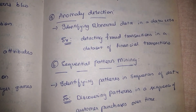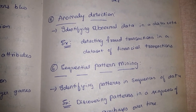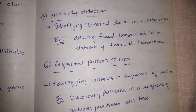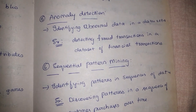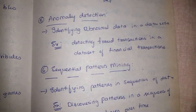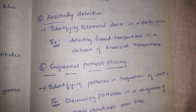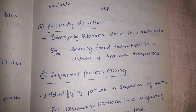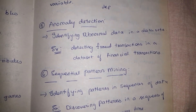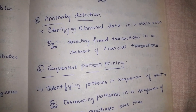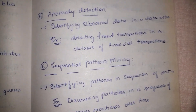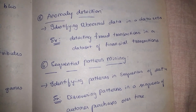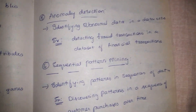Next is anomaly detection. Anomaly detection means looking for inaccuracies or abnormalities in a particular dataset — for example, detecting fraudulent transactions in a dataset of financial transactions that are not genuine.